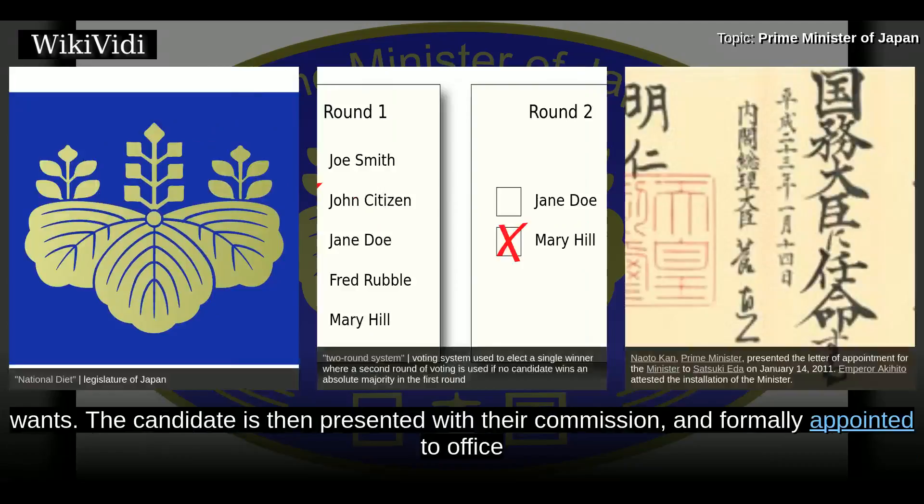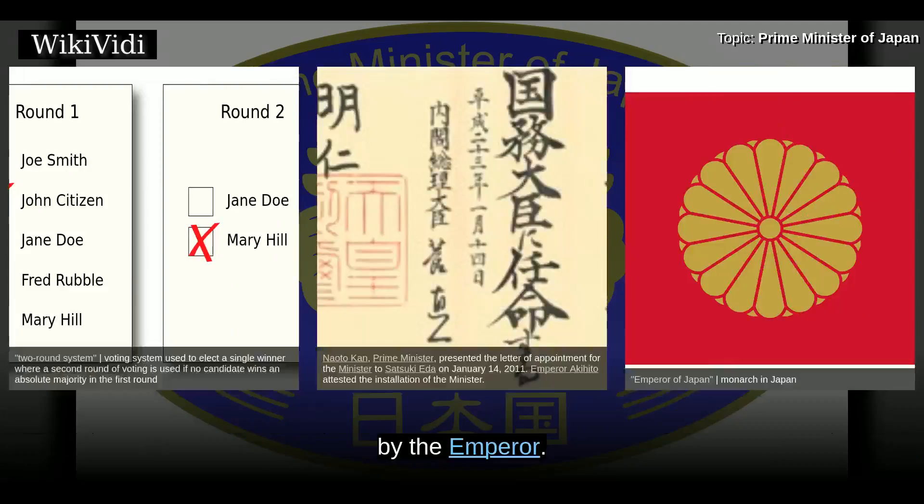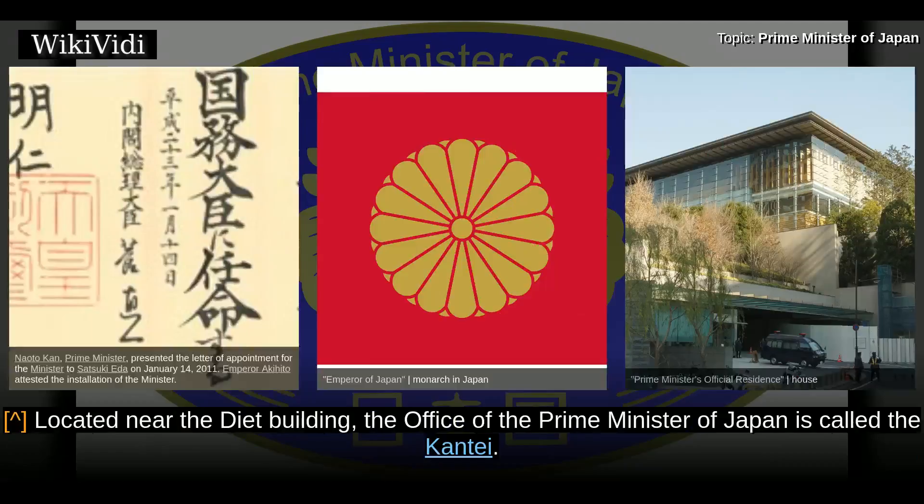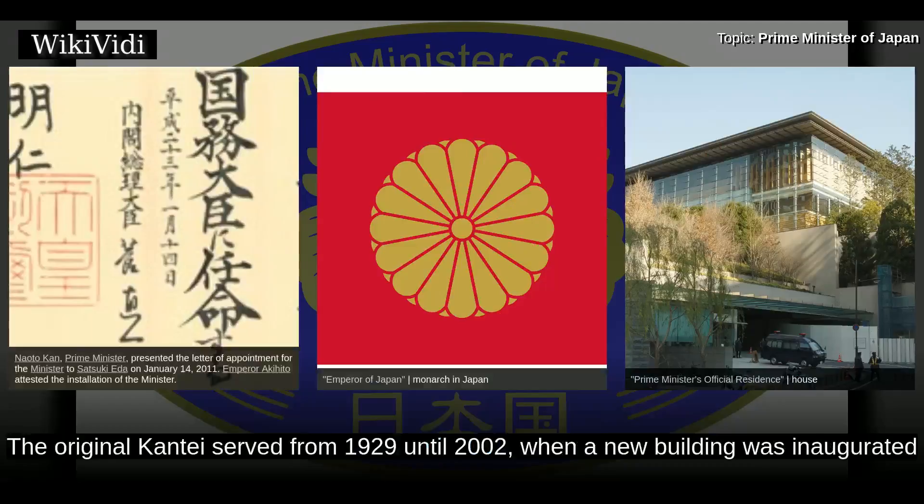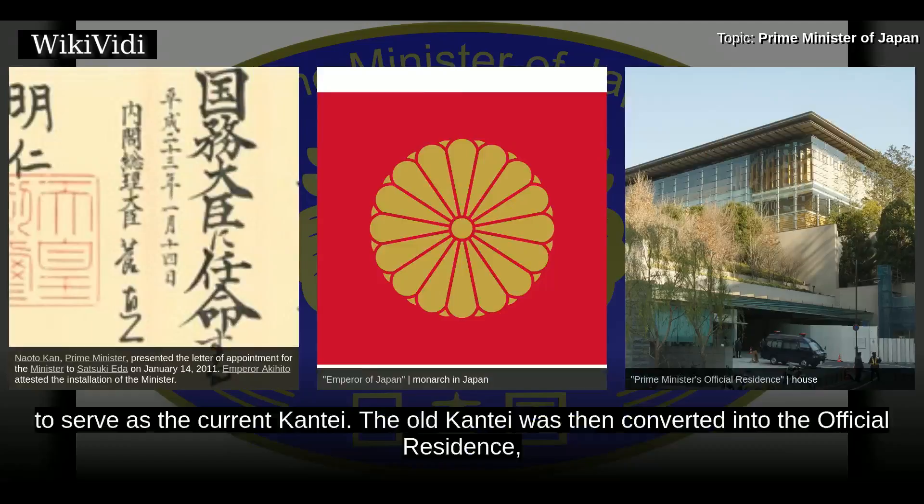Official office and residence. Located near the Diet building, the office of the prime minister of Japan is called the Kantei. The original Kantei served from 1929 until 2002, when a new building was inaugurated to serve as the current Kantei. The old Kantei was then converted into the official residence, or Kōtei. The Kōtei lies to the southwest of the Kantei and is linked by a walkway.